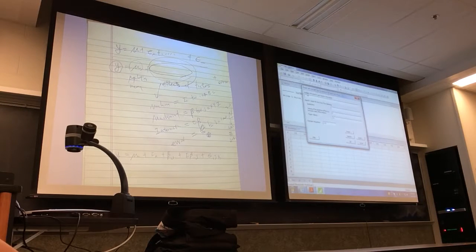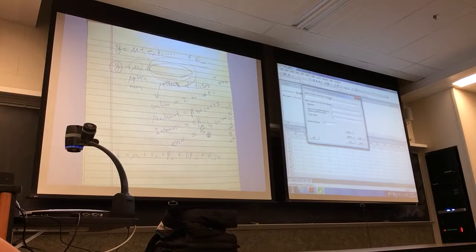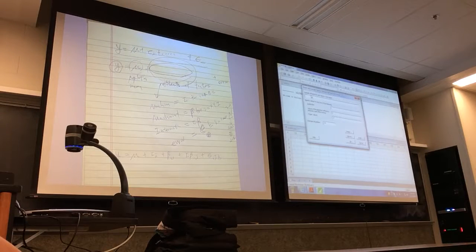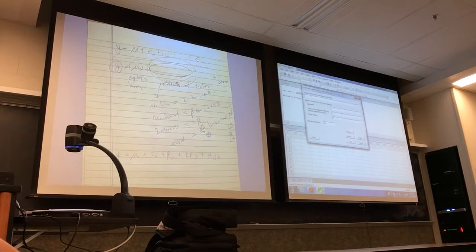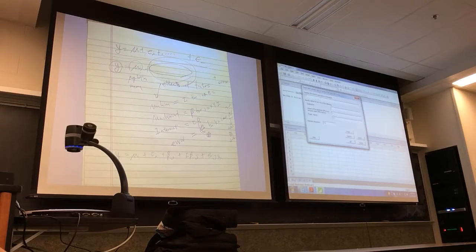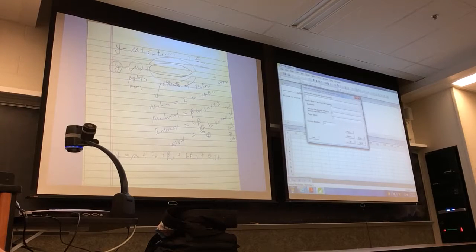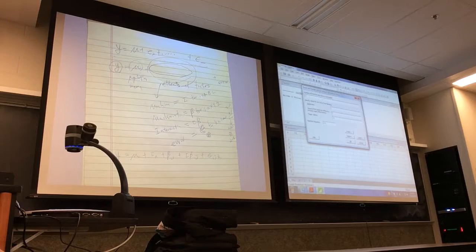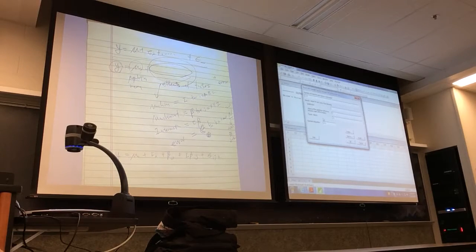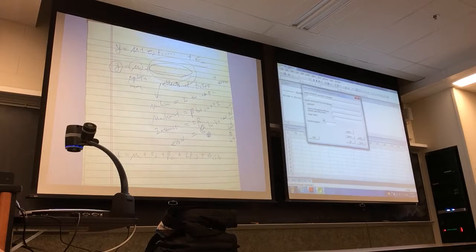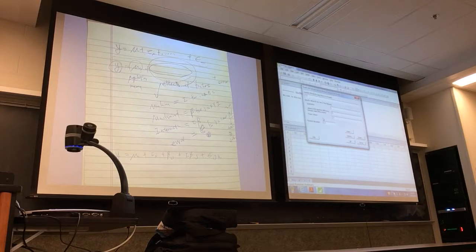Here there is something called the number of levels of each factor in the model. So how many levels do we have for the machine? Three. And how about for the operator? Three. So you need to type 3, put a space, and then type 3 again. If you have 3 factors with all different levels, you should put the numbers corresponding to those factors and levels.